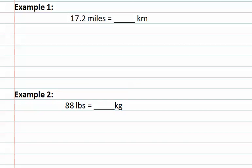In example one, we have 17.2 miles and we would like to know how many kilometers this is. We would need to look at a table of conversion factors. I will give you the conversion. So, we are given that 1.61 kilometers equals one mile.